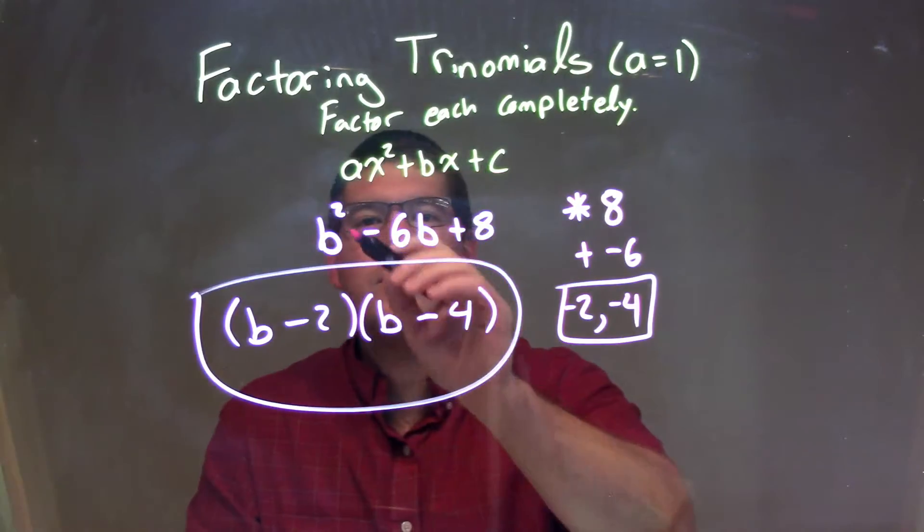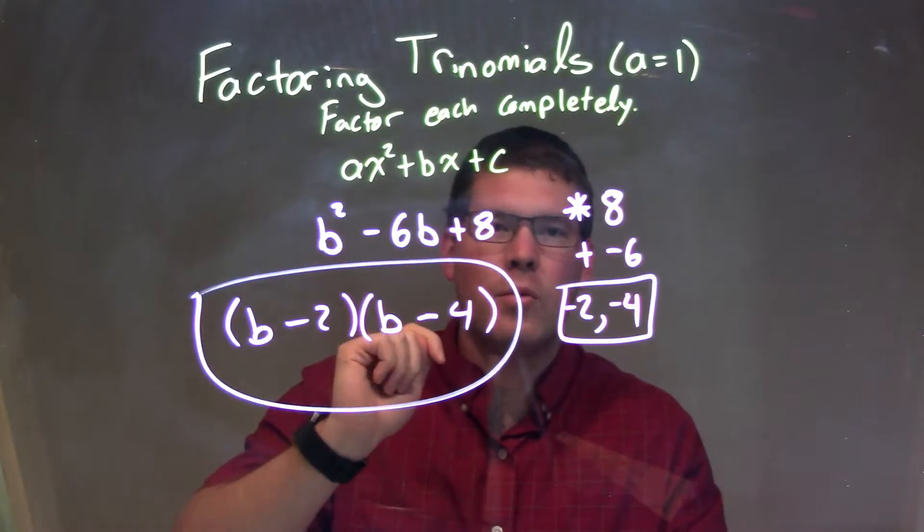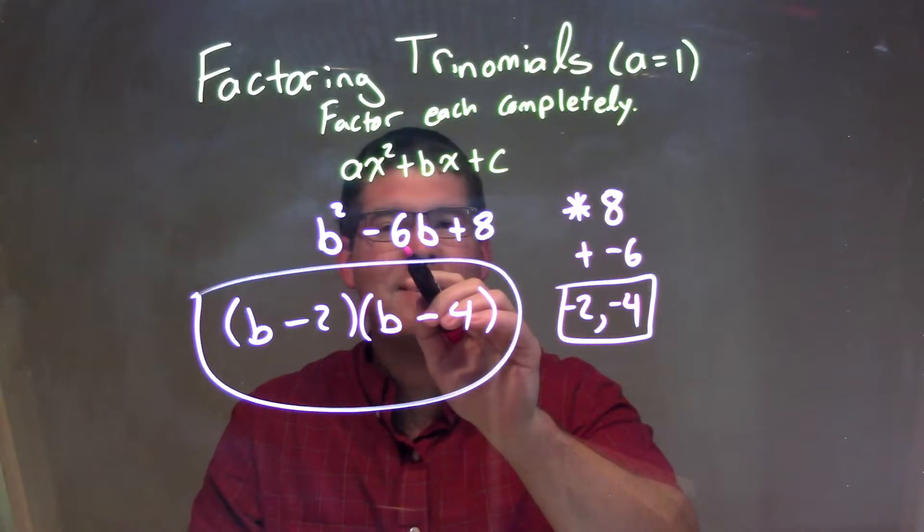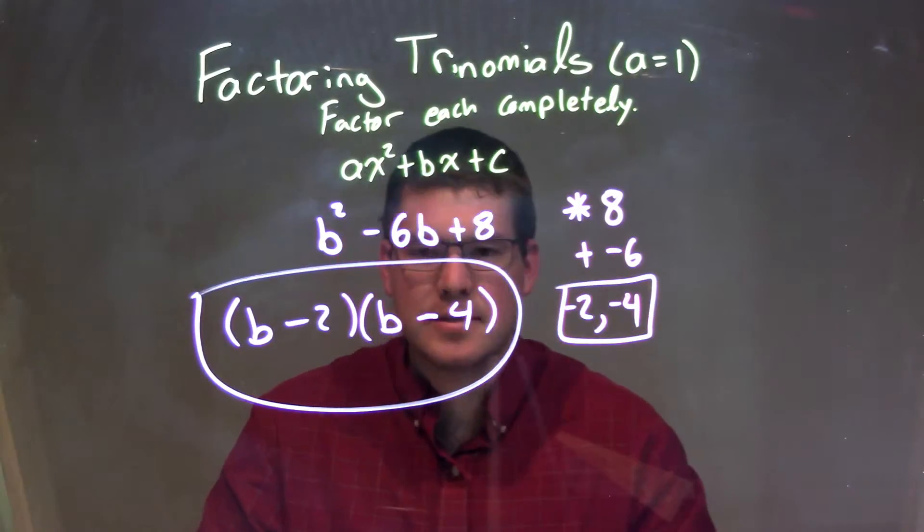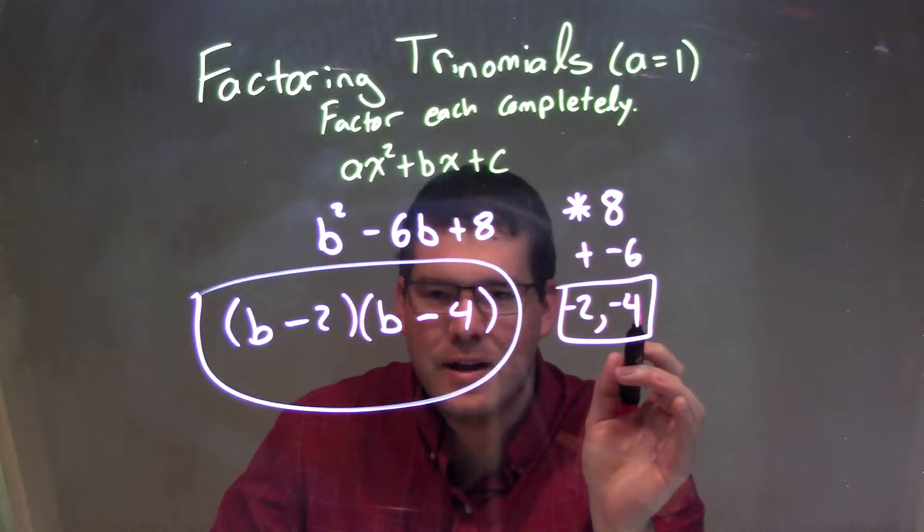So let's recap. We're given b squared minus 6b plus 8, where we have an a value of 1, so we ask ourselves a question. What multiplies to be c, which is 8, but adds to be our b value, which is negative 6? Those two numbers come up to be negative 2 and negative 4.